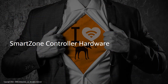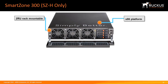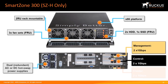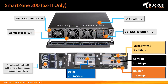The Ruckus SmartZone 300 is a high-performance, high-availability hardware platform designed for large-scale critical carrier networks. The 2U rack-mountable chassis opens from the front to allow access to the field-replaceable fans and redundant disk drives. The rear of the chassis contains the dual redundant hot-swappable power supplies, and the management, control, cluster, and data plane ports.